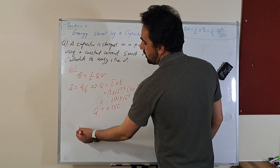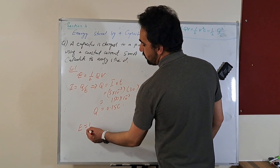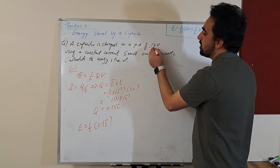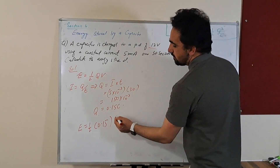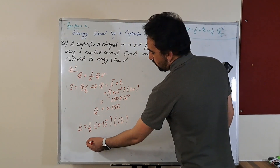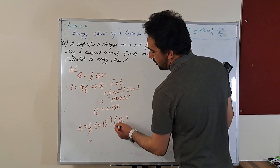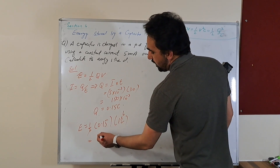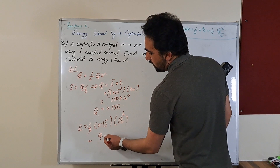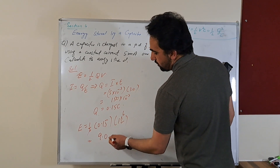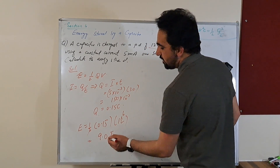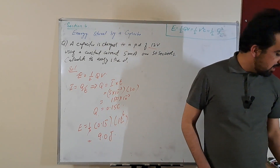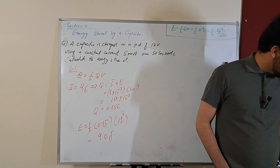Now energy is equal to 1/2 multiplied by 0.15 and potential difference is 12. So we get: 1/2 times 12 is 6, and 6 multiplied by 0.15 gives 0.9 joule of energy. So that's the amount of energy stored by a capacitor.